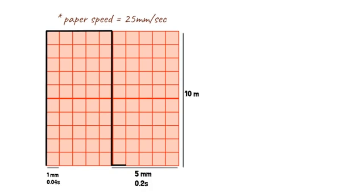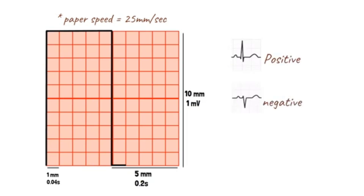On the vertical axis, 10 mm or 10 small squares is equal to 1 mV when standard calibration is used. Positive voltages are reflected as upward deflections on the ECG, while negative voltages are reflected as downward deflections.